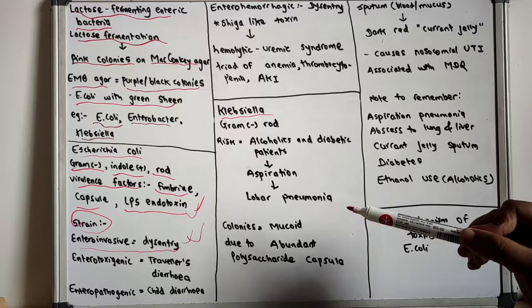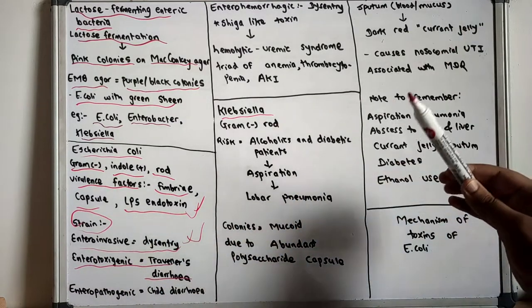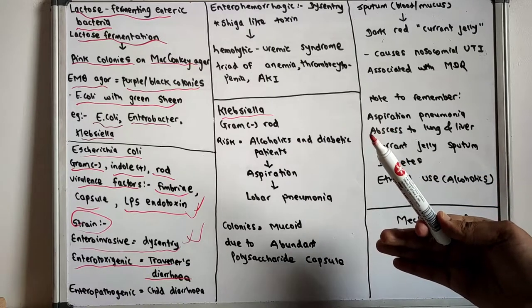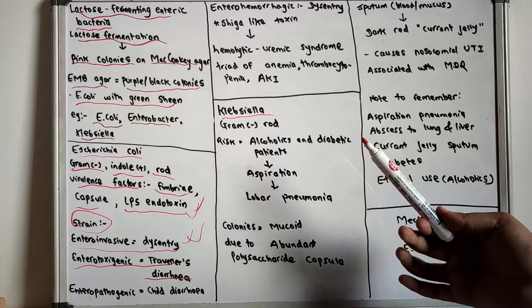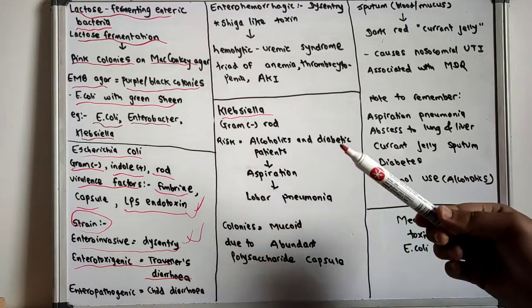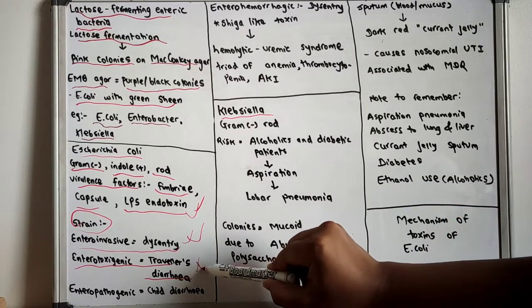The enterotoxigenic E. coli causes traveler's diarrhea. The enterotoxigenic E. coli produces heat-labile and heat-stable enterotoxin, but there is no inflammation or invasion. So purely the enterotoxins are responsible for the diarrhea.